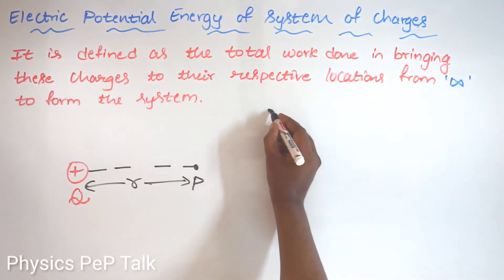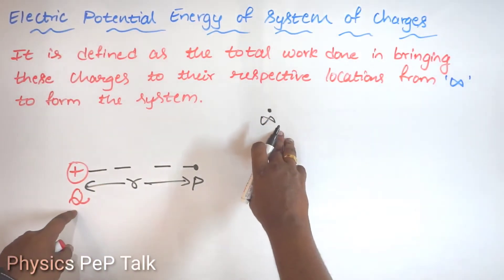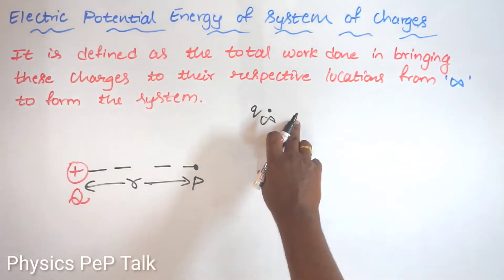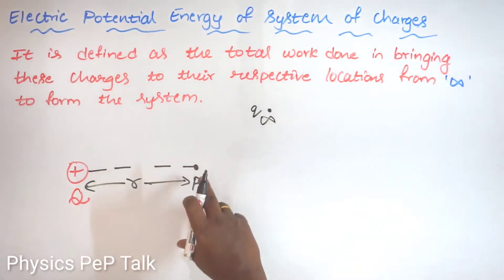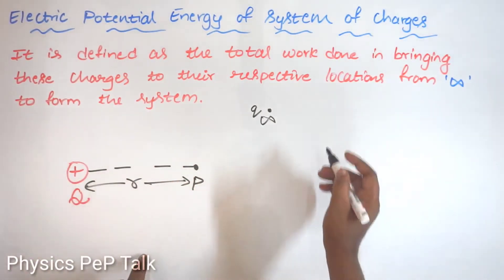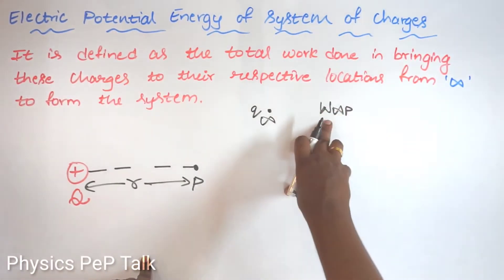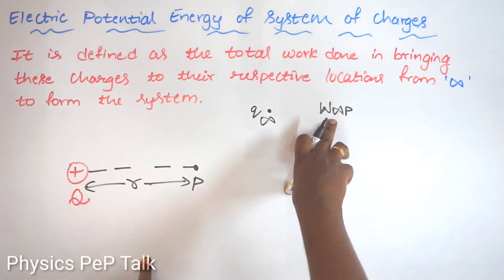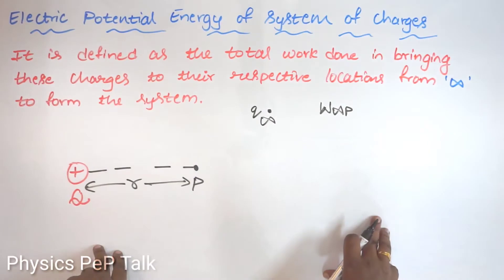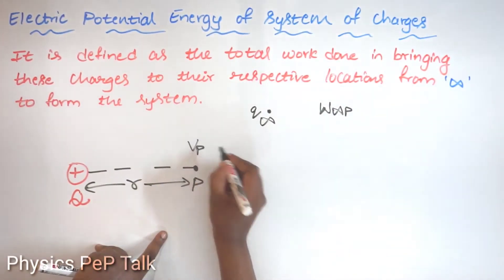Now, I will bring a charge which is at infinite distance from this charge Q. Let me call this charge as small q. Small q is at infinite distance, and I need to bring it to point P. If it is a positive charge, I have to do some work against the direction of the electric field. I will call that work as W from infinity to point P — that is, the work done in bringing a charge from infinite distance to point P against the direction of electric field. By doing this work, I will get the electric potential at point P.